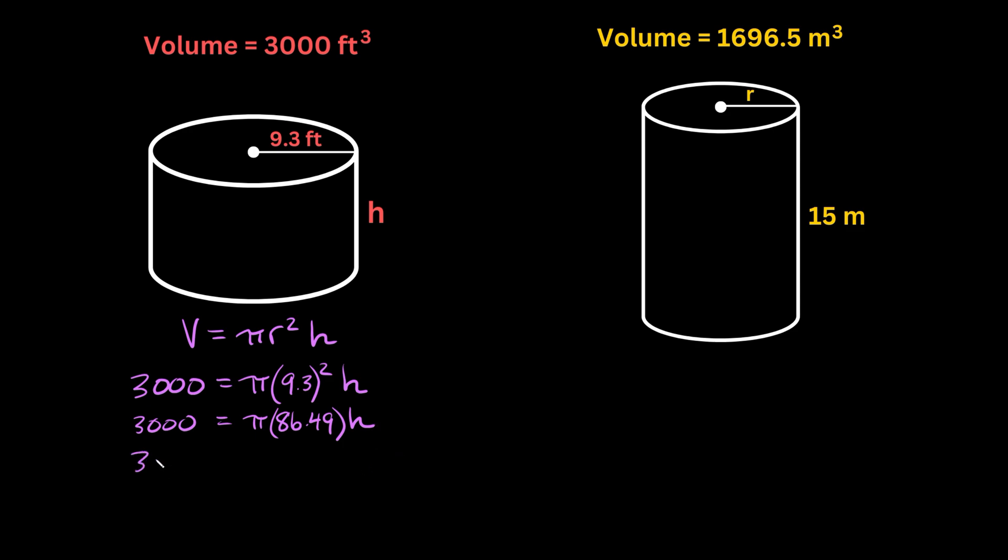So then here we get 3,000 is equal to 86.49 times pi, which is equal to approximately 271.72, and lastly we're multiplying by h. Now here we can isolate h, we just need to get rid of this,